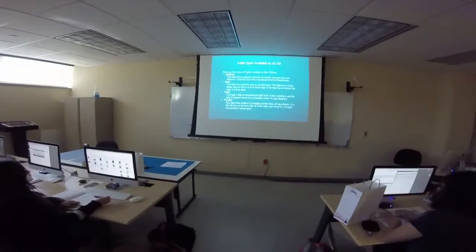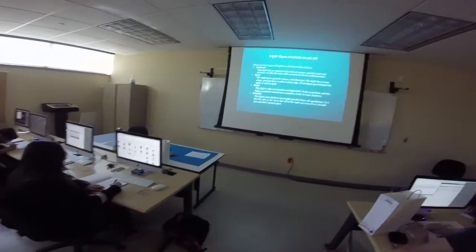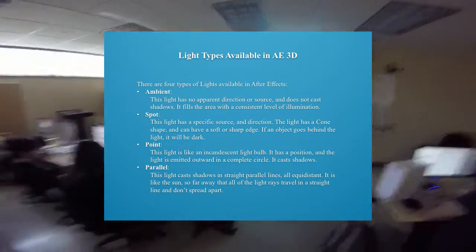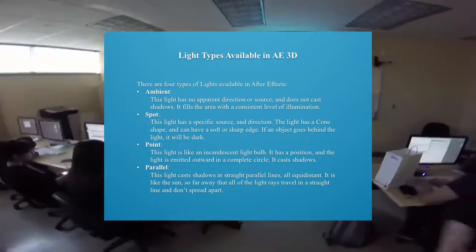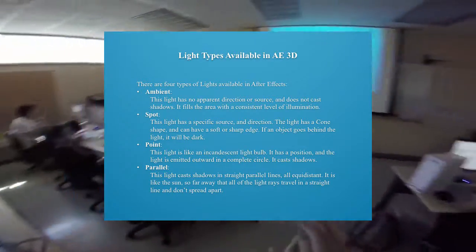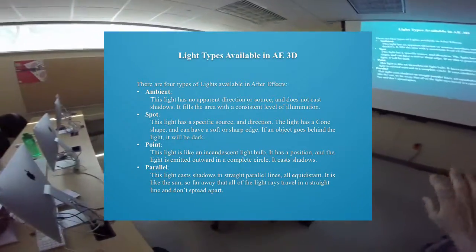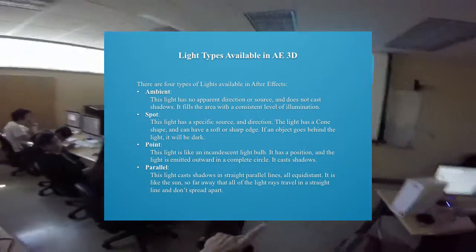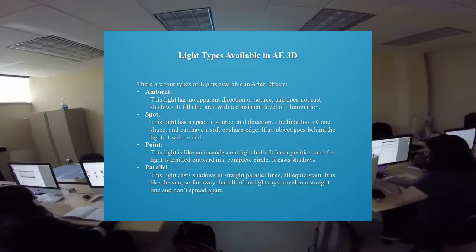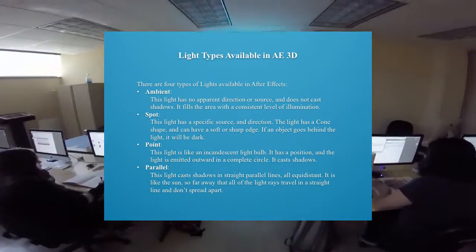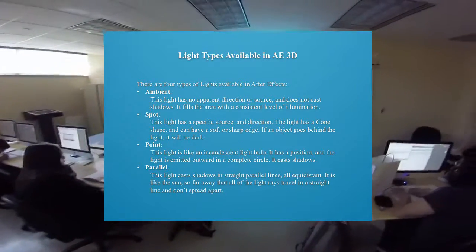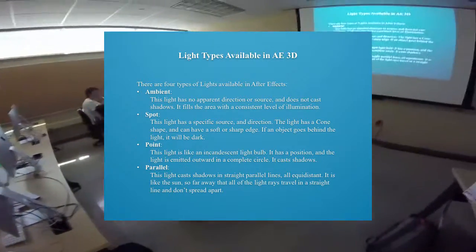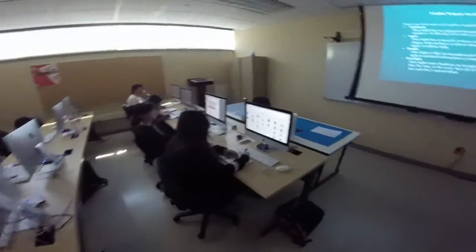A point light is like an incandescent light bulb — it has a position and emits light outward in a complete circle. It casts shadows, and the rays come out at an angle so shadows get bigger farther from the object. A parallel light casts shadows in straight parallel lines, all the same distance apart. It's like the sun, which is so far away that all light rays travel in a straight line and don't spread out to us.